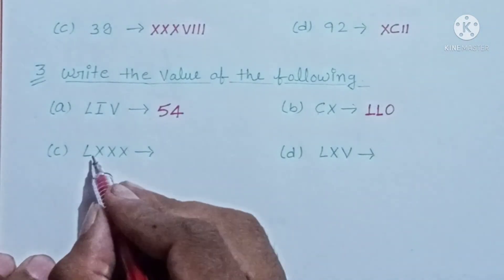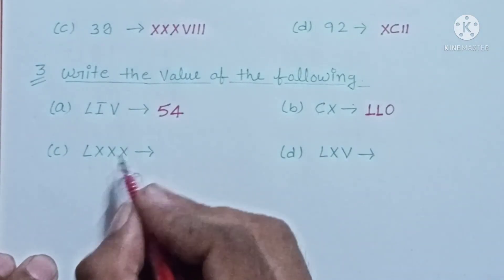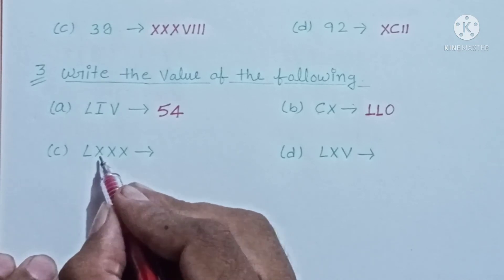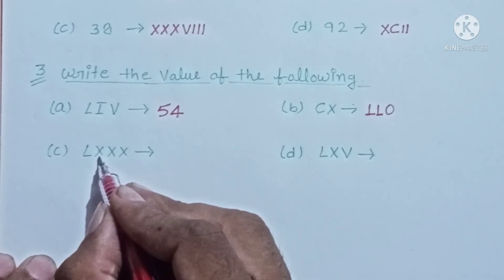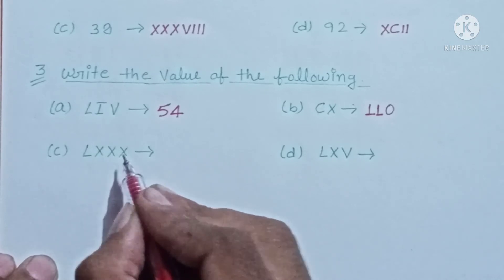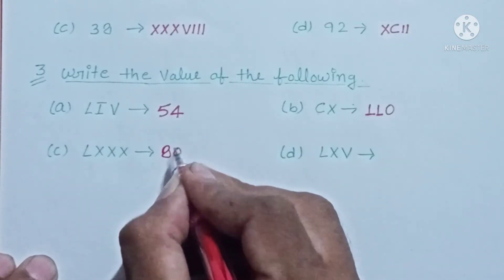Next C: LXXX. L for 50, X for 10, X for 10, X for 10. 50 plus 10 is 60, plus 10 is 70, plus 10 is 80. Its value is 80.